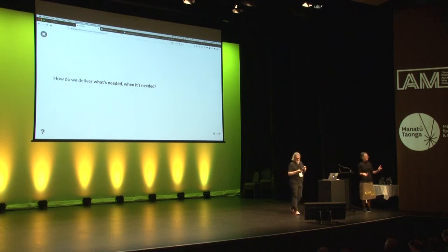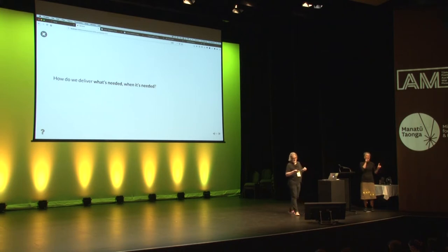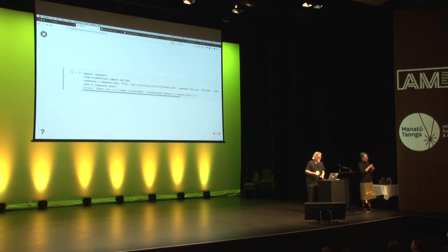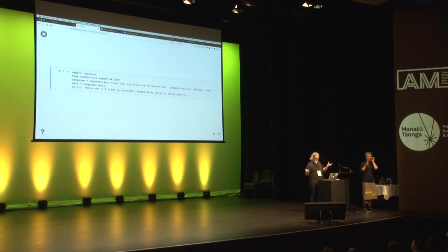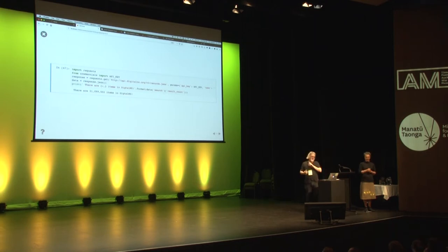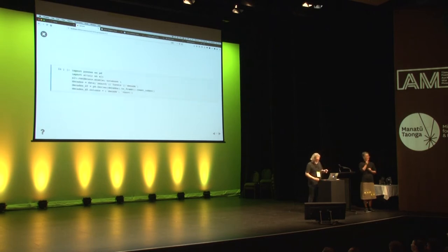When somebody realises that their research would be so much easier if they could get data out of DigitalNZ, how can we share a live practical example of using the DigitalNZ API? Perhaps starting with something as simple as finding out how many items there are in DigitalNZ, or going a step further and looking at the distribution of items in DigitalNZ over time.